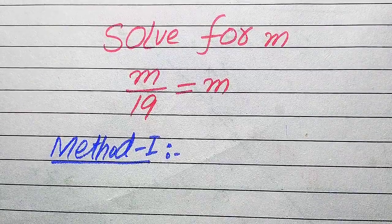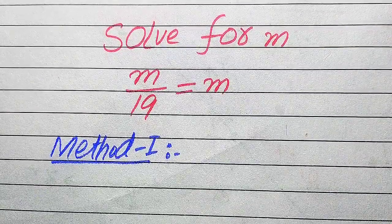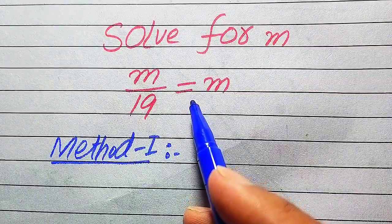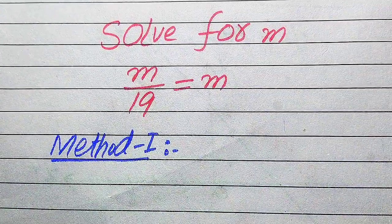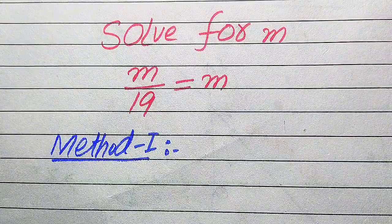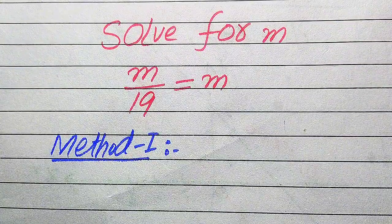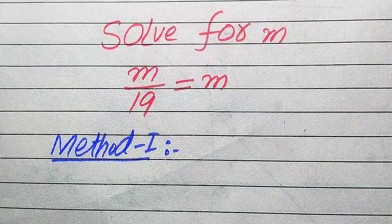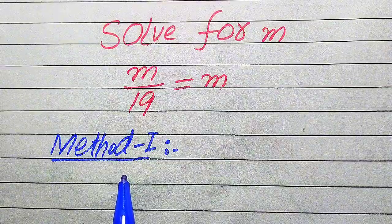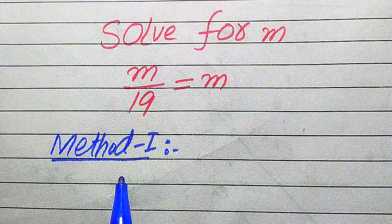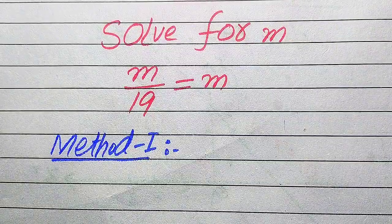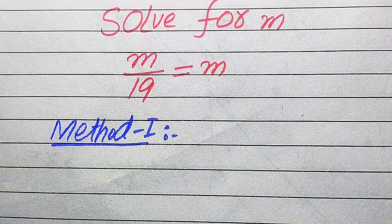Hello everyone. We need to solve this problem: for what values of m does m divided by 19 equal m? We will find all the roots of this equation, then verify which roots are solutions and which are extraneous. We will solve this problem using two methods, and if you have another method in mind, please write it in the comments section.